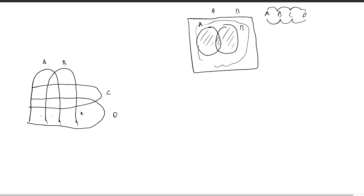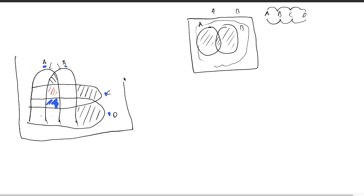Each partition represents a specific combination of medicines. For example, one partition contains people who received medicine D only; another represents people who received only medicine C. The partition that is part of A, B, C, and D simultaneously represents all people who received all four medicines. People who received A, B, and C only are in their own partition. Anyone who received none of A, B, C, or D is represented outside the diagram within the universal set.